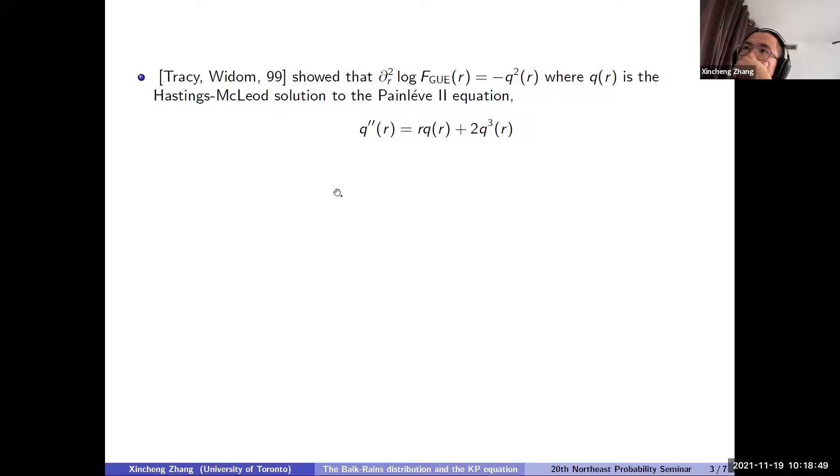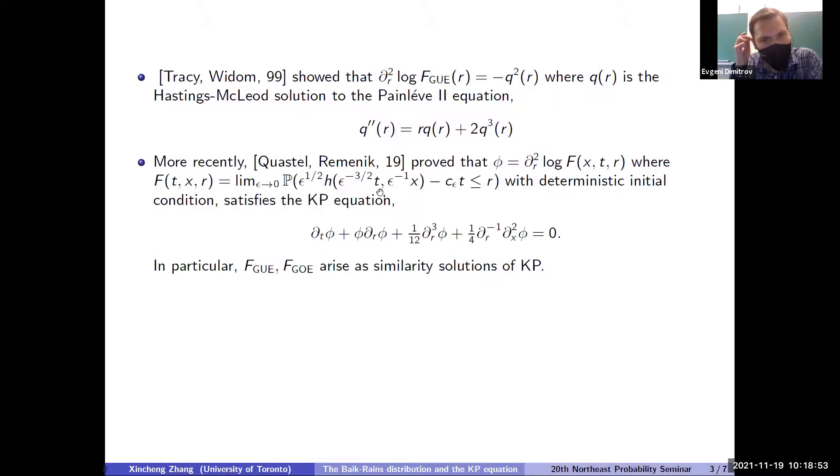And more recently, Quastel and Remenik proved the following result. So if you start the KPZ equation with some deterministic initial data, and you look at this large space-time scale of the KPZ equation. So here, this is basically the same like T to the one-third scale. So you look at the probability function of this KPZ equation at large time-space scale. This is the same T to the one-third scale in the previous slides, but it is taken in a different way. So you introduce the extra variable ε. And ε has the correct one-two-three scaling. And you let ε go to zero. And you see, in this way, you see the extra variable T in the limit.